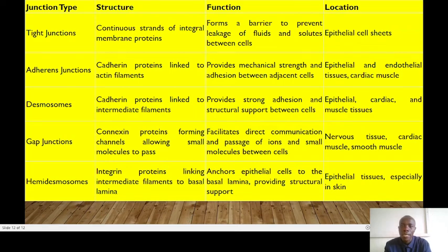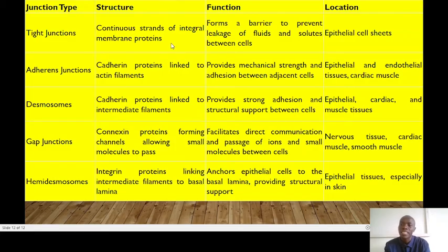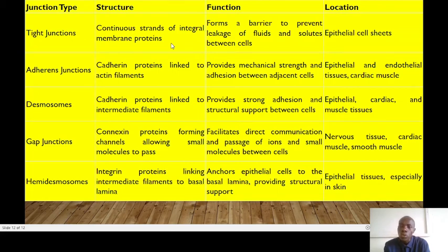To wrap up, here are the differences between the five types of cell junctions. Tight junctions consist of continuous strands of integral membrane proteins, whereas adherent junctions have cadherin proteins linked to actin filaments. Cadherin proteins in desmosomes are linked to intermediate filaments, while gap junctions have connexin proteins that form tunnels allowing small molecules to pass.